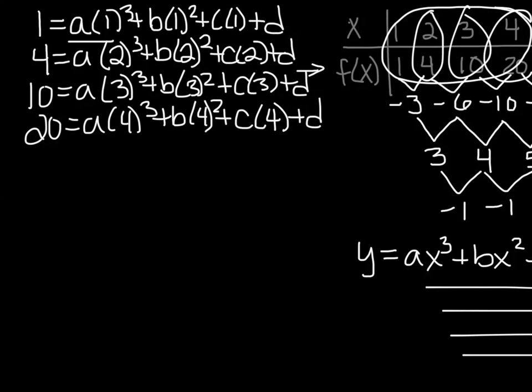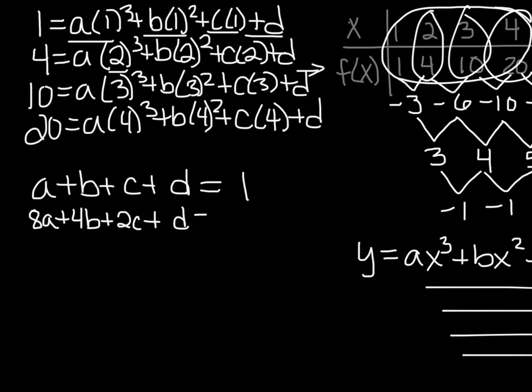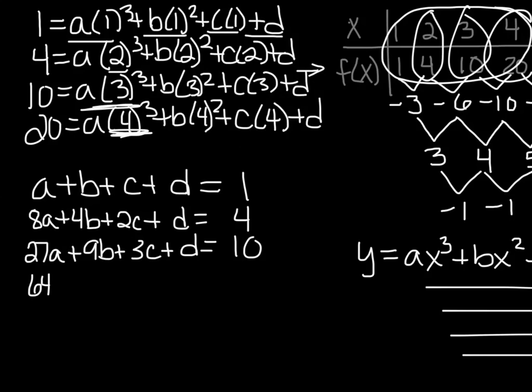So we have 1a plus 1b plus 1c plus 1d. I'm going to put the answer to the right this time. Because when we do our augmented matrix, we like to have them on the right, and they need to be on the right. 2 cubed is 8, 2 squared is 4, and then 2c plus d equals 4. 3 cubed is 27, 3 squared is 9, 3c, 1d gives me 10. And 4 cubed is 64, so 64a plus 16b plus 4c plus d equals 20.